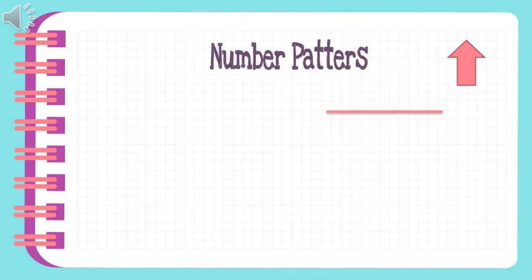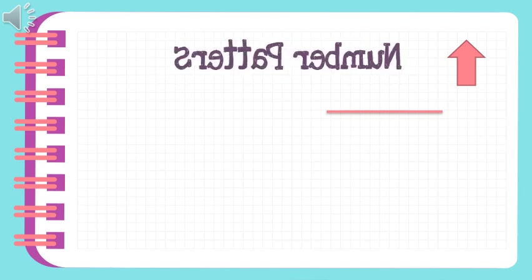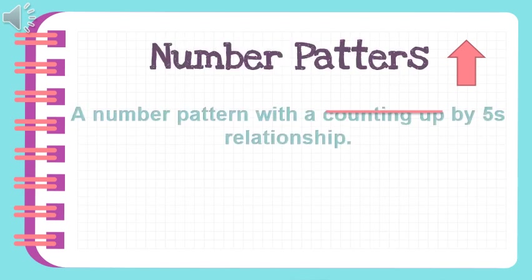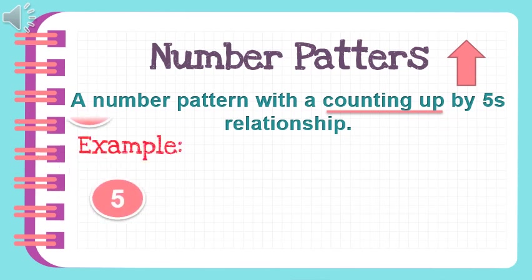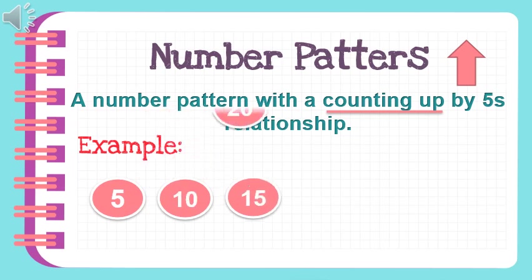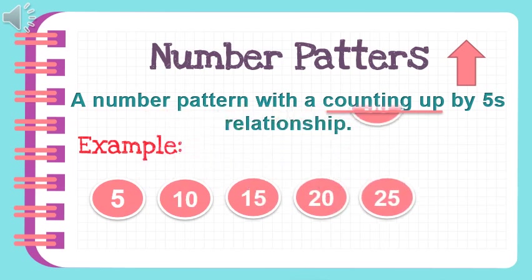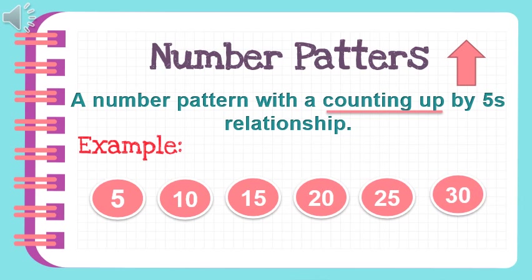Number patterns: a number pattern with a counting up by fives relationship. For example: five, ten, fifteen, twenty, twenty-five, and thirty. As you see, the numbers from five to thirty are in ascending order, meaning it's counting up, and it's counting up by fives.